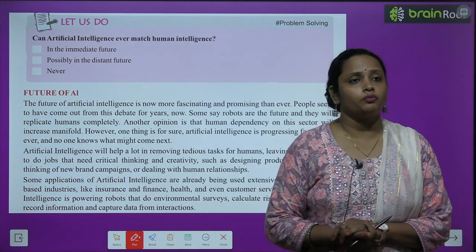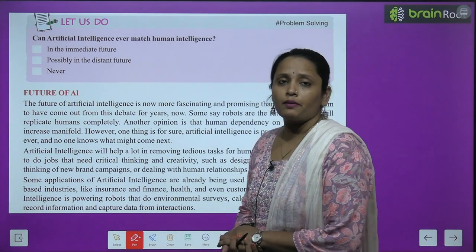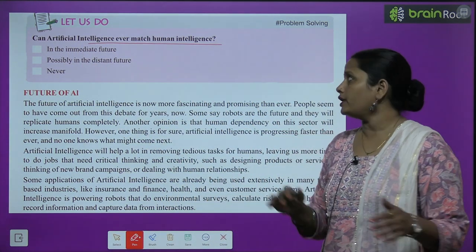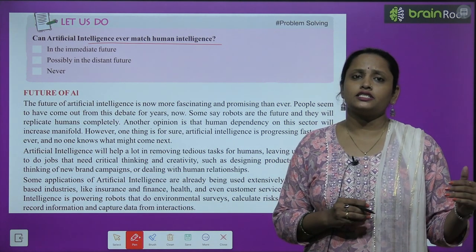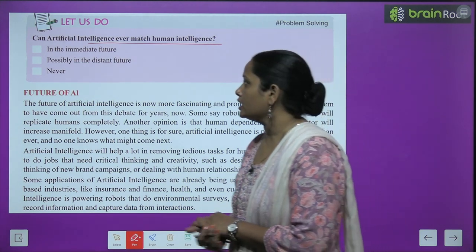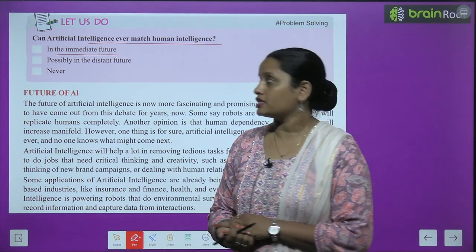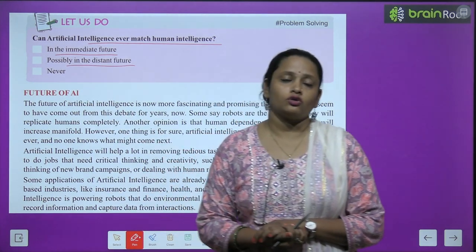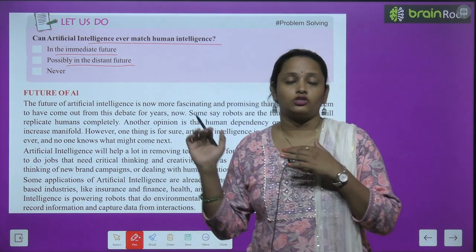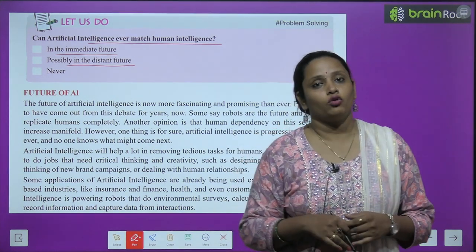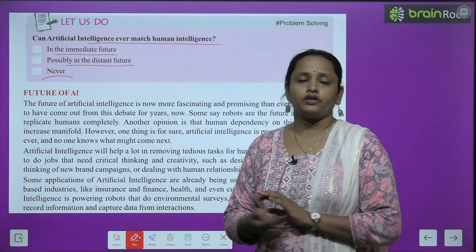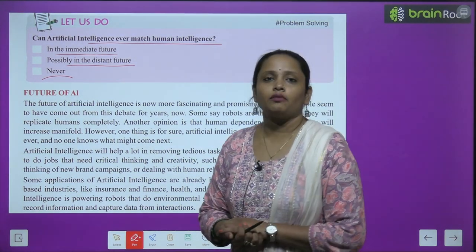Now children, there is an activity given in your book — let us do it. यहाँ पे आपसे question पूछा गया है: Can artificial intelligence ever match human intelligence? आपको क्या लगता है — ये जो artificial intelligence है, क्या कभी भी हम humans के intelligence को match कर सकता है? In the immediate future, in the distinct future, या फिर never — कभी नहीं। So whatever you think, children, you can write here.